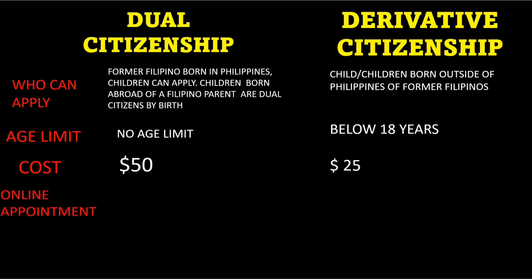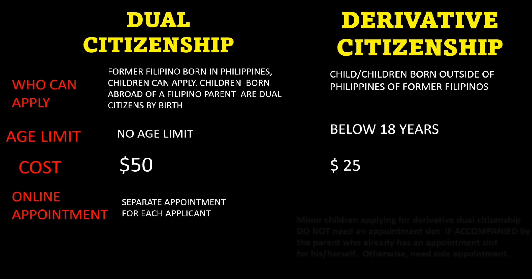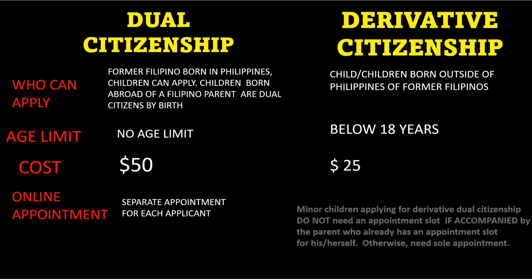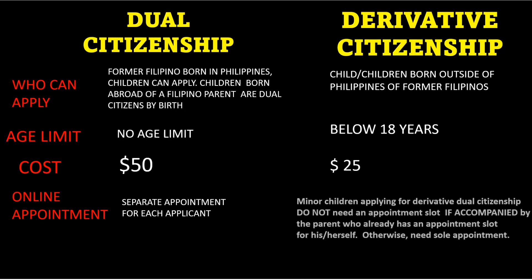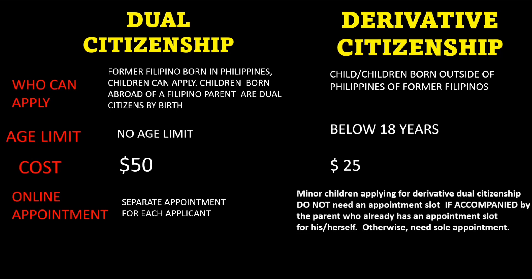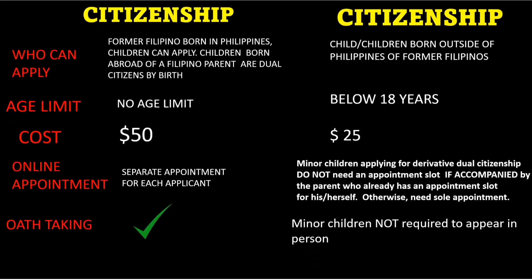For online appointment: a separate appointment is required for each applicant. For derivative, minor children applying do not need an appointment if accompanied by the parent who has an appointment slot. For oath-taking: for dual citizenship, it is necessary. However, for derivative, minor children are not required to appear in person.